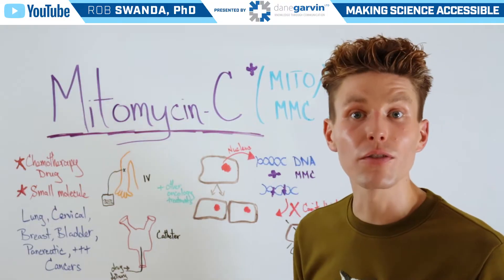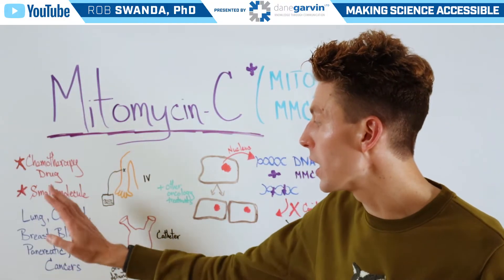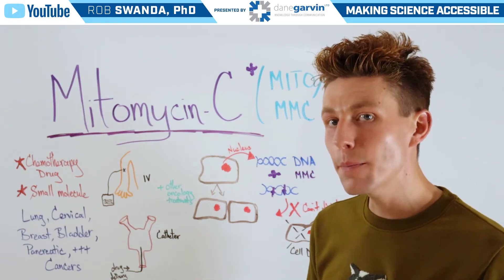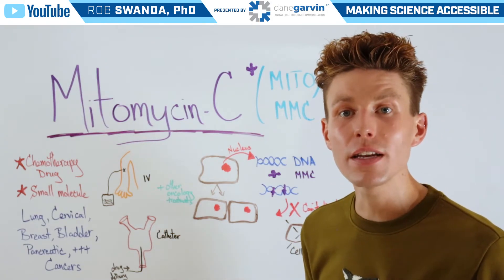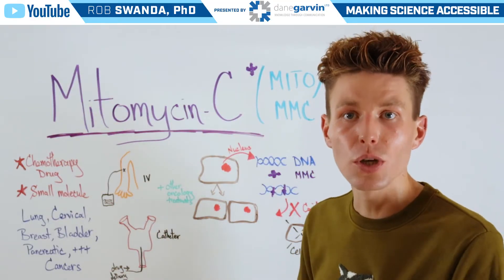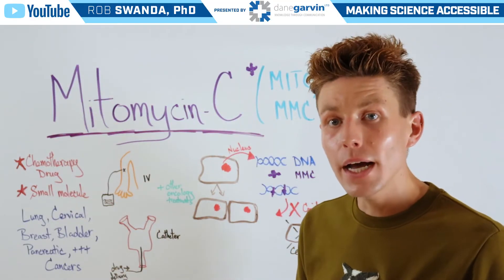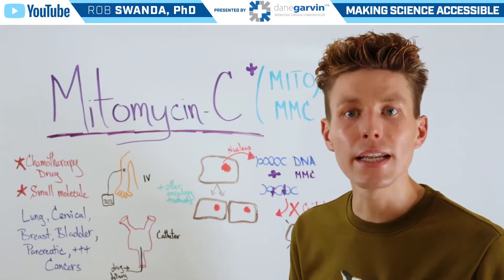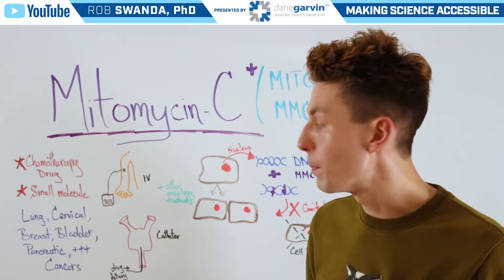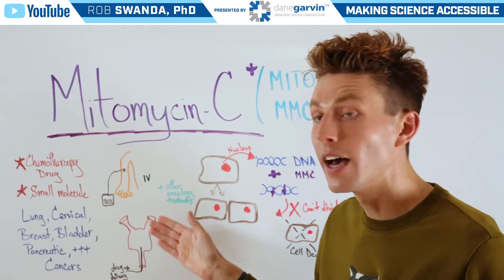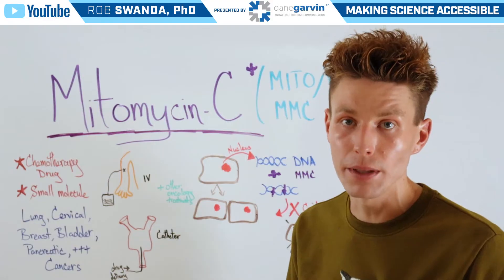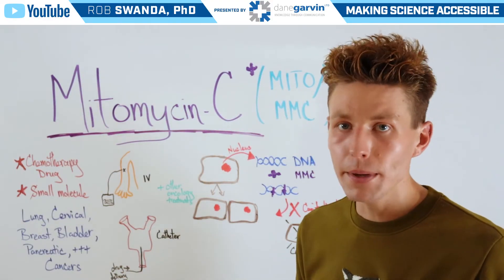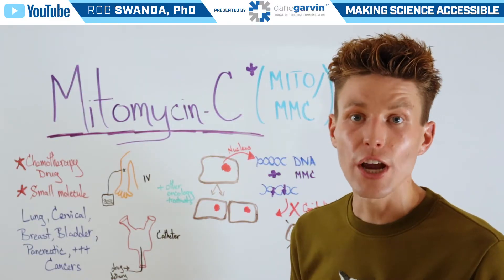It's used in a variety of different cancers, including lung, cervical, breast, bladder, and pancreatic. Typically, when it's used, it's given via an IV drip, so directly into someone's bloodstream. But depending on where the cancer is located, it can be given in other ways — such as if it's bladder cancer, this drug can be delivered via a catheter right to the bladder. Mitomycin C is typically used in combination with other treatments, such as radiation.